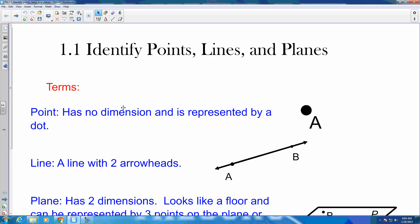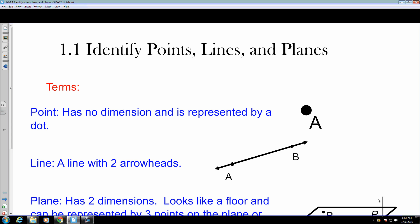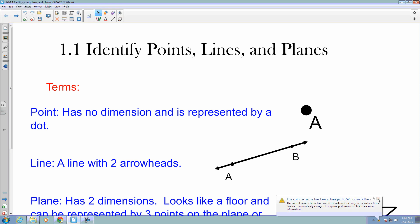Alright, we are in section 1.1. We are going to be identifying points, lines, and planes. When we're looking at the basic points of geometry, it comes from those three definitions.